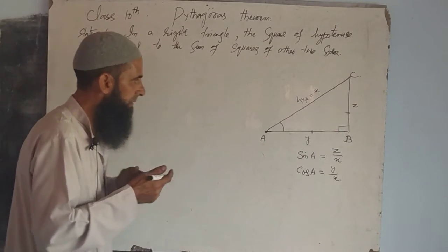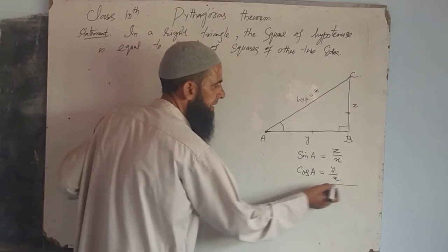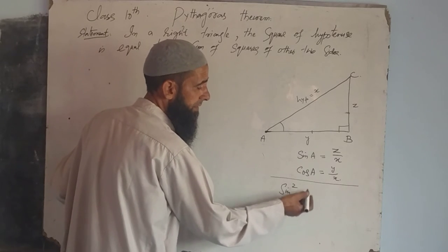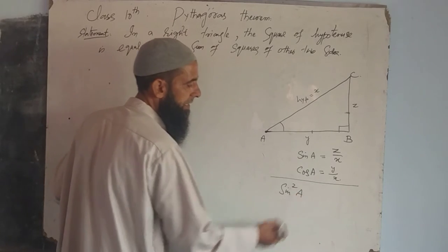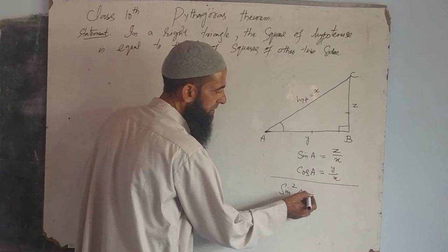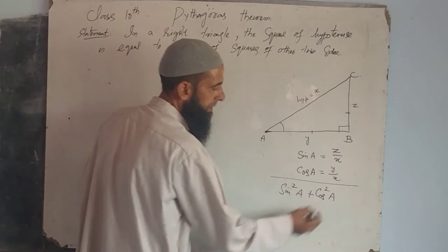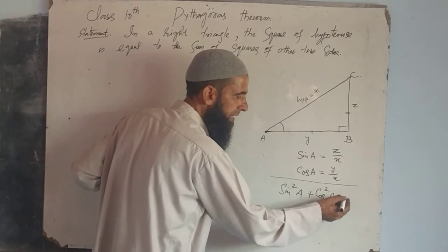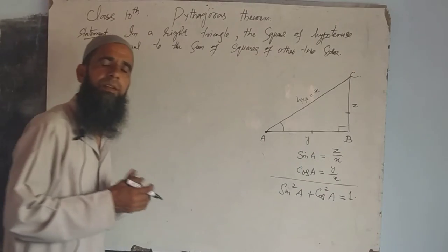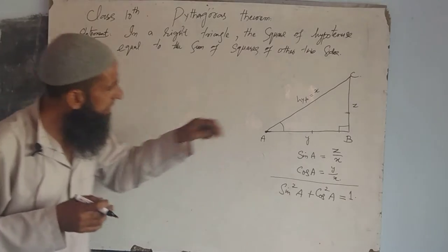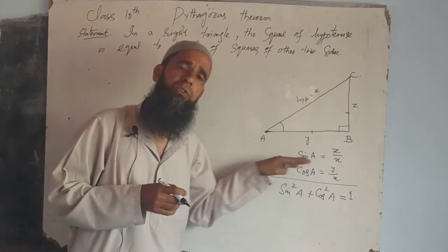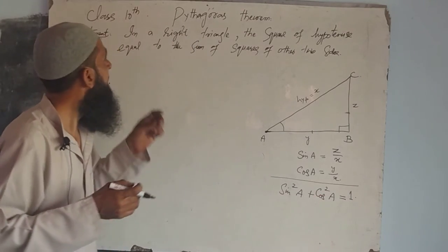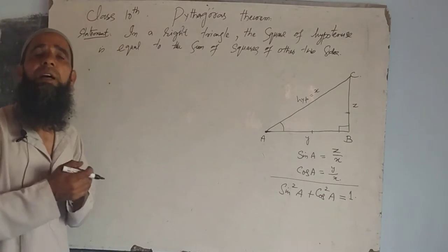Dear students, we know a well-known identity: sin squared theta plus cos squared theta is always equal to 1. Using trigonometric ratios and this trigonometric identity, we will provide the proof of this theorem.